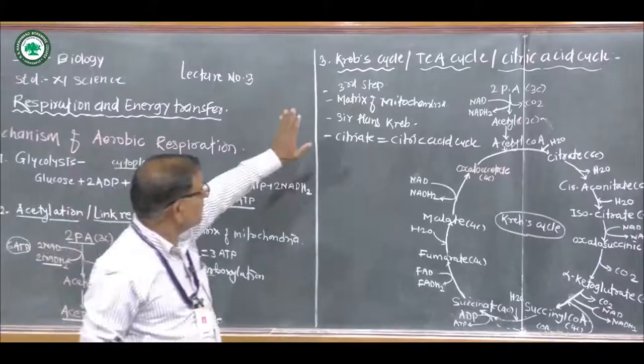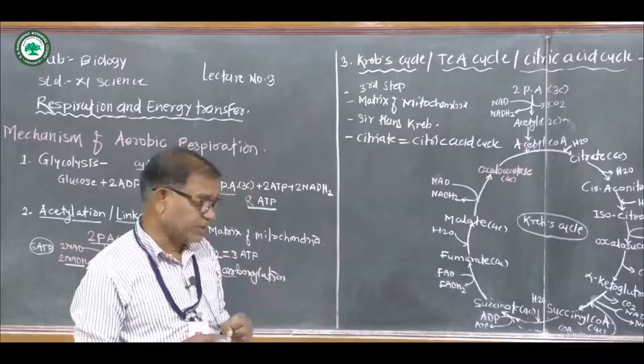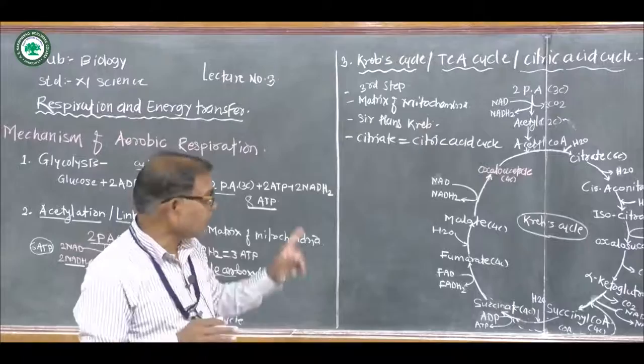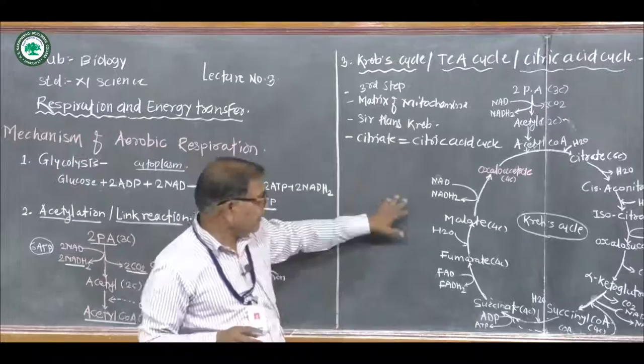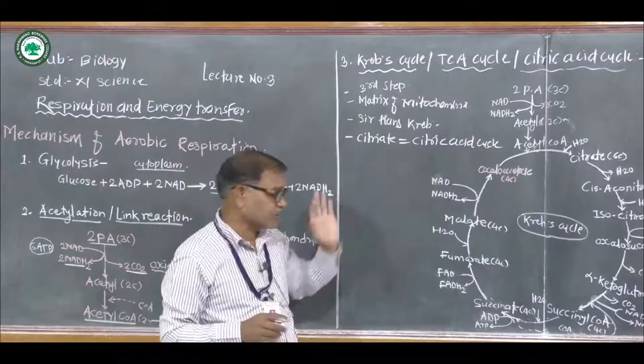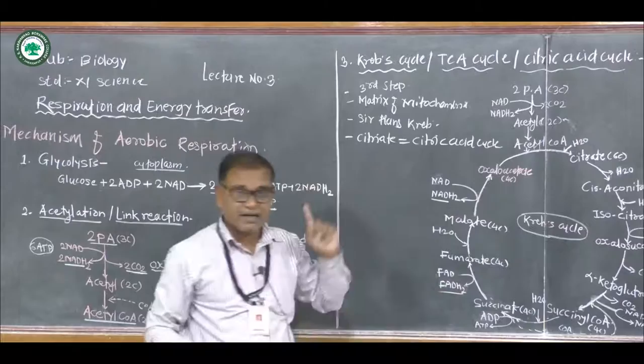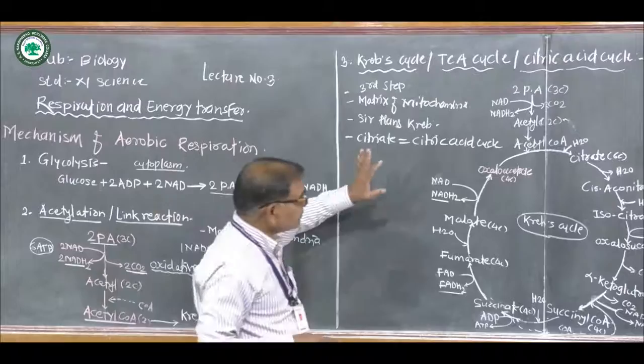The breakdown in the Krebs cycle involves four dehydrogenations, two decarboxylations, and finally the FAD and NADH2 produced enter the electron transport system.